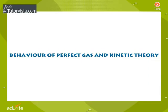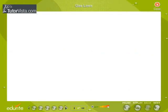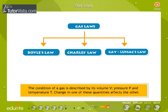Behavior of Perfect Gas and Kinetic Theory. Gas Laws: The condition of a gas is described by its volume V, pressure P, and temperature T. Change in one of these quantities affects the other.